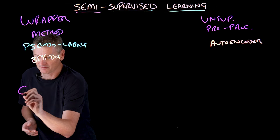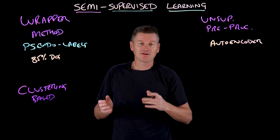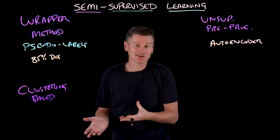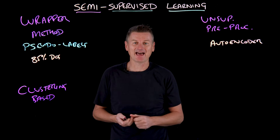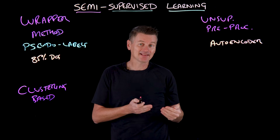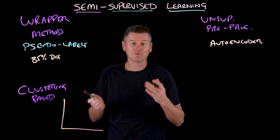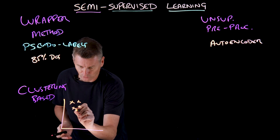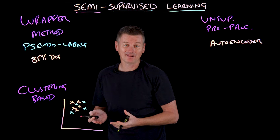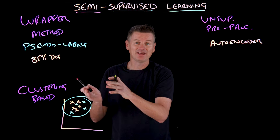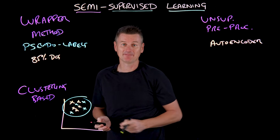Another method commonly used relates to clustering-based methods. These apply the cluster assumption, which is essentially that similar data points are likely to belong to the same class. A clustering algorithm, something like k-means, can group all data points — both labeled and unlabeled — into clusters based on their similarity. For example, if we have some labeled examples that fall in one area of the matrix, and then unlabeled examples that fall around the same area, we can pseudo-label the unlabeled images in that cluster as well. So if the labeled images were cats, we could say those unlabeled ones in the same cluster are cats too.